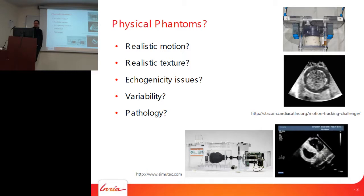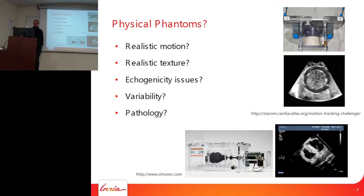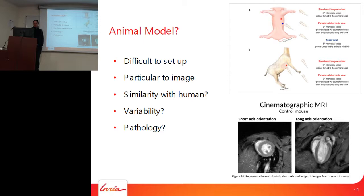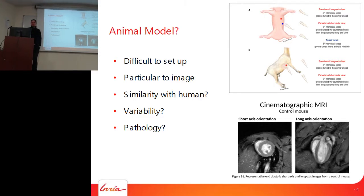One approach is to build physical phantoms, but that has difficulties in terms of motion, texture, and the variability needed to explore different shapes and pathologies. There's also the animal model approach that Jan presented, but it's a complex setup, complex to image, and there are questions about correlation with human patients and how to increase viability, since each case is very difficult.